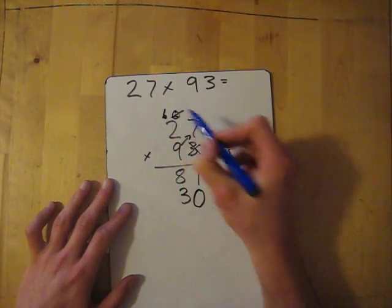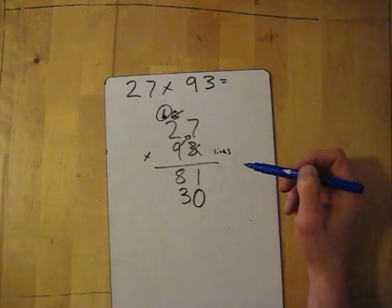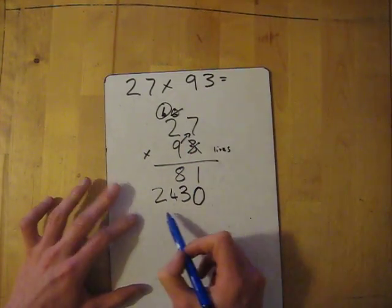We've already used the two, so I'll just get rid of it. Nine times two is 18. And then don't forget to add that six. Eighteen add six, it's 24. Now we've killed everyone above.